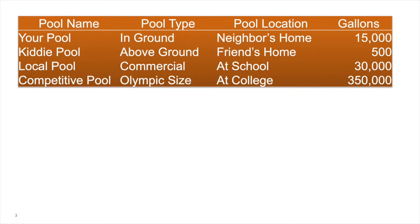An attribute is simply something that describes another element, and in our data we should make different attributes for those different kinds of pools.